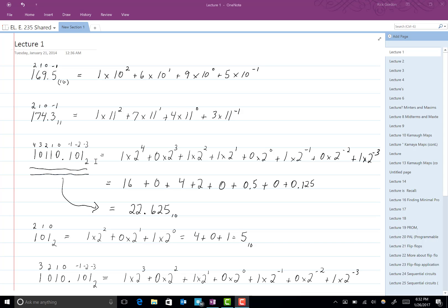So 22.625 base 10. Here is our first example of converting a binary number to a decimal number. Binary means base 2, and we have converted it to decimal. Decimal means base 10. We have converted here a binary number to a decimal number.